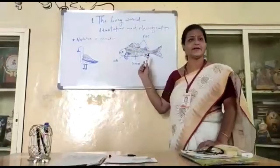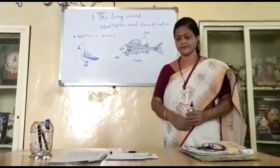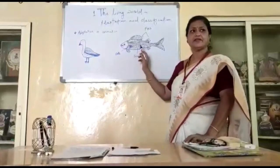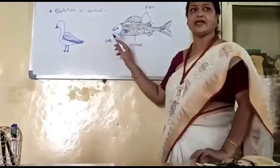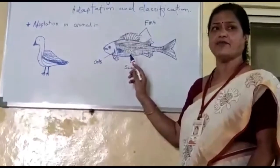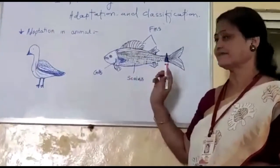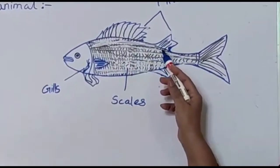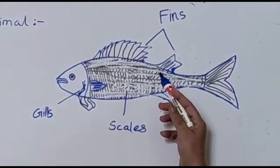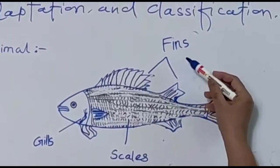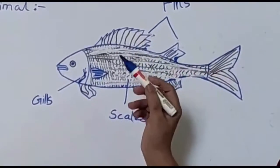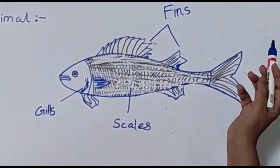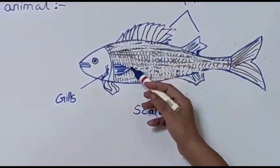Fish is one example of an aquatic animal. As compared to terrestrial animals, the skin and body shape of aquatic animals appear to have undergone changes. Fish have scales on the skin, and their body tapers towards both ends — it is like a spindle.